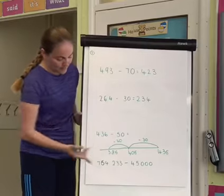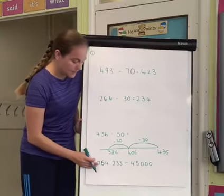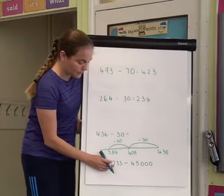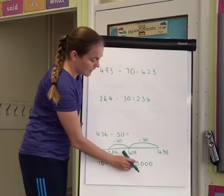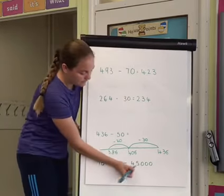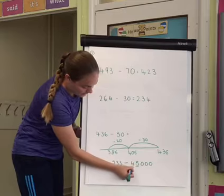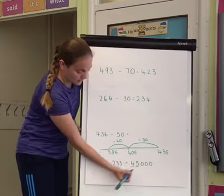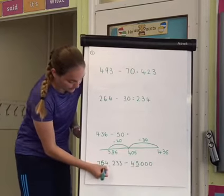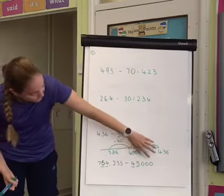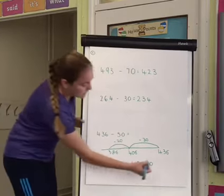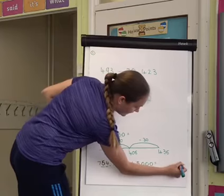Down here, the numbers getting bigger, but it's the same approach. So we've got 764,233 take away 45,000. I've got to think which of my numbers are going to change. So I've got to change my ten thousands and my thousands. So that's those two numbers. I'm looking at them. I know my 233 is going to stay the same in my answer. So I can write that bit straight in.